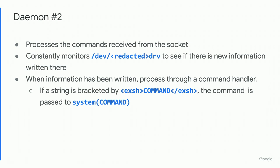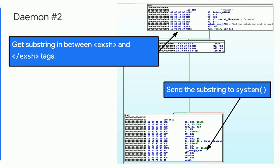Daemon number two's job is to process commands received from the socket. It constantly monitors the kernel character device for when new information is written there. What was most interesting is that if the string received from the socket was encapsulated by two tags — EXXSH and the closing EXSH — it immediately passed whatever was between them to system(). In IDA you can see it looking for the substring between those two tags and then passing it directly to the system syscall — which is really not good.